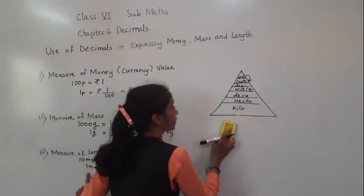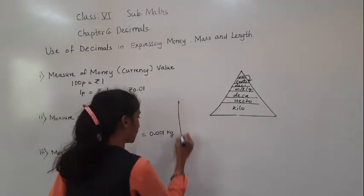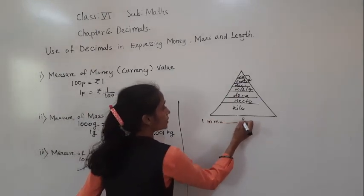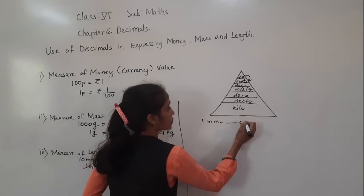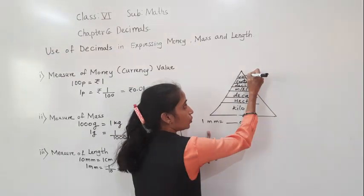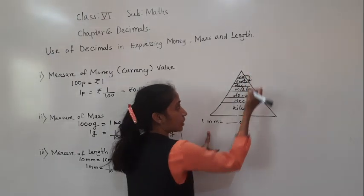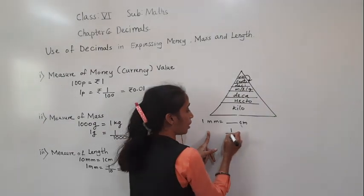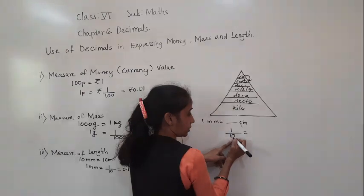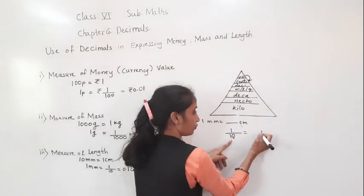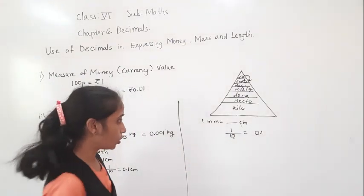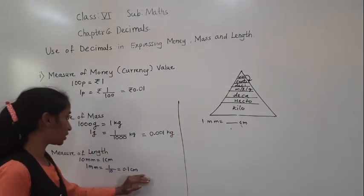Now 1 mm is equal to how much centimeter? Millimeter is here and I want to convert into centimeter — that means coming one step down, so divide by 10. That gives 1 upon 10. Shifting the decimal point before one digit: we get 0.1 centimeter.